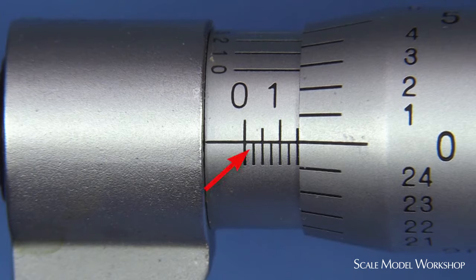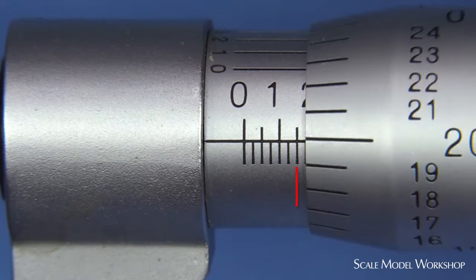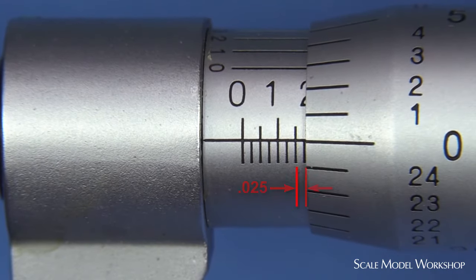In imperial measurements, the sleeve scale is marked in increments of twenty-five thousandths of an inch and it's numbered every tenth of an inch. The thimble scale is marked and numbered in thousandths of an inch. Every rotation of the thimble moves the thimble twenty-five thousandths of an inch.